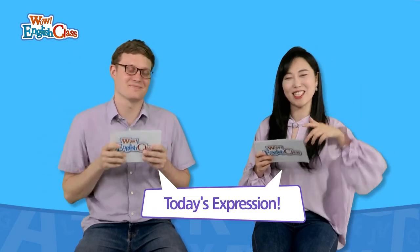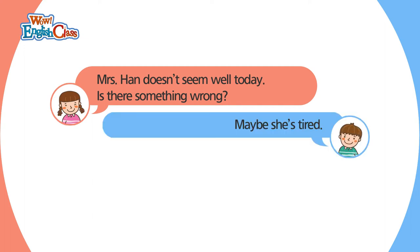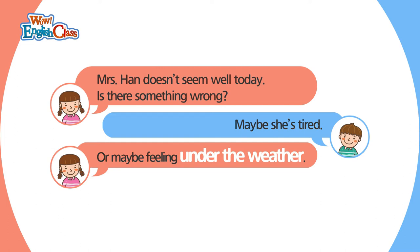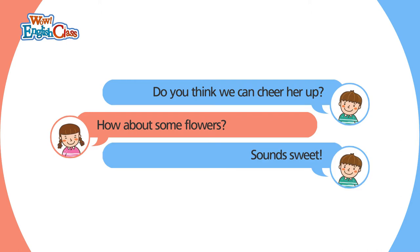하루에 하나씩 재미있고 유용한 표현으로 알려주는 Today's Expression 시간입니다. 자 오늘 표현은요 정말 재미있어요. Today's expression is 'Under the weather.' Under the weather. Under 밑에 있어요, the weather. 날씨 밑에 있어? 무슨 말이야? 대화 속에서 무슨 뜻을 유추해 볼게요. Mrs. Han doesn't seem well today. Is there something wrong? Maybe she's tired. Or maybe feeling under the weather. Do you think we can cheer her up? How about some flowers? Sounds sweet.